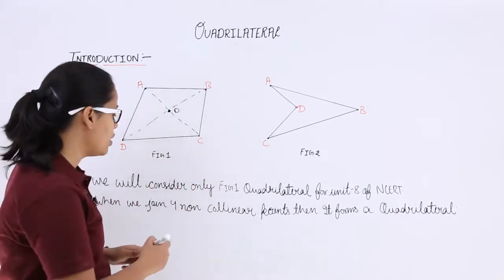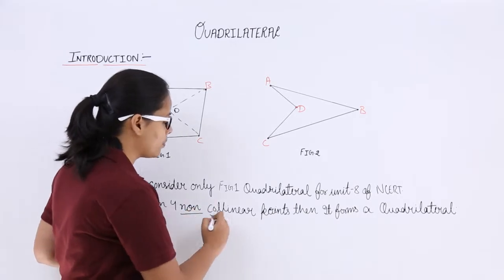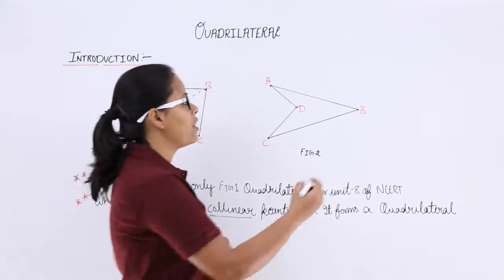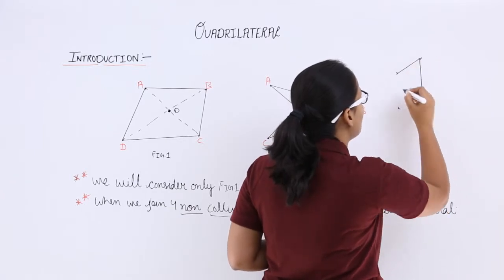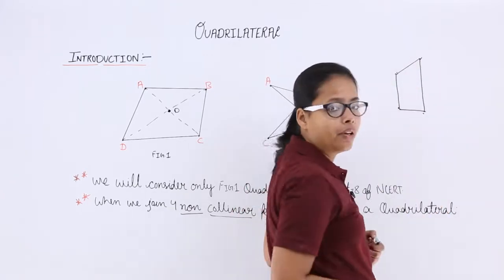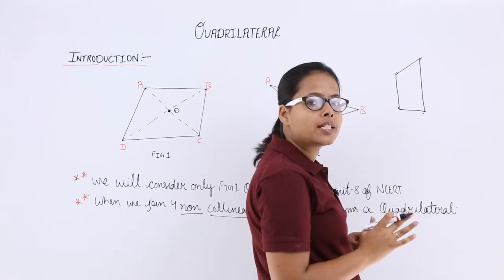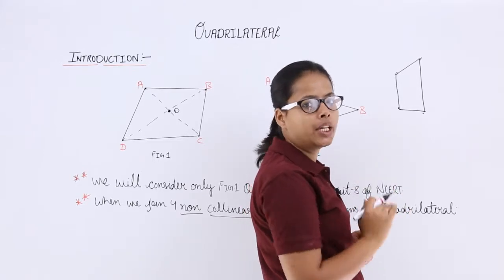And what do I mean by non-collinear here? Let's suppose there are four points in a plane. When you join these four points it will form a quadrilateral. These four points keep in mind should be non-collinear in nature.